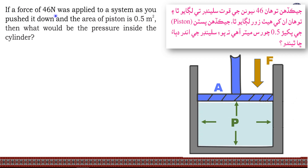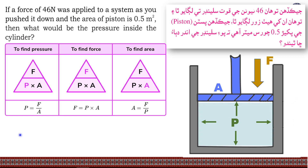If a force of 46 N is applied to a piston as you push it down, and the area of the piston is 0.5 m², then what would be the pressure inside the cylinder? The pressure equals force divided by area, so P = 46 / 0.5.